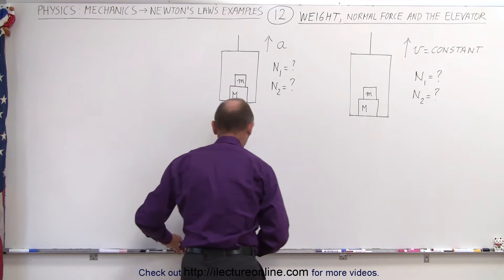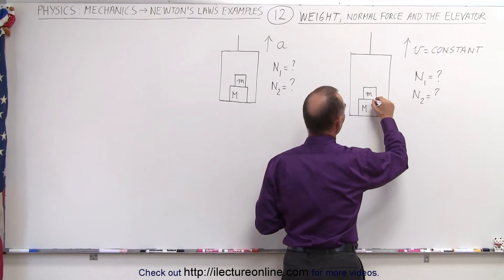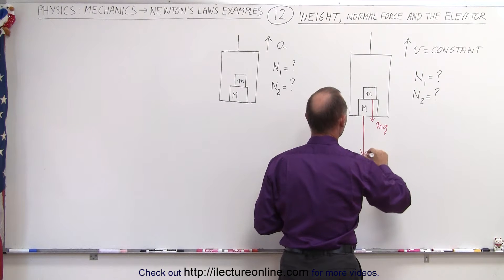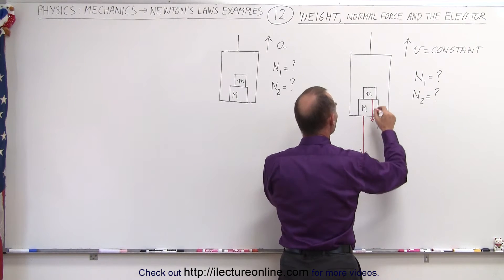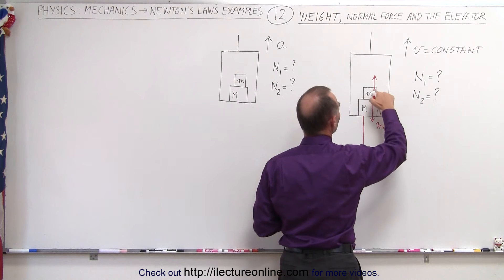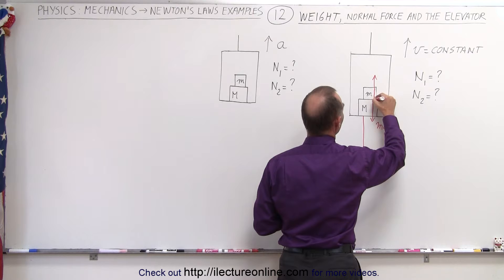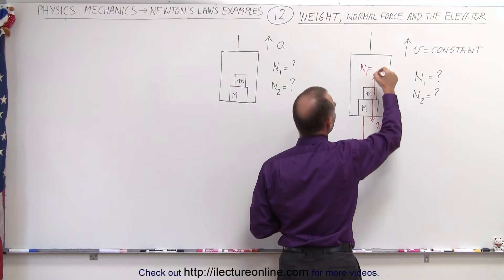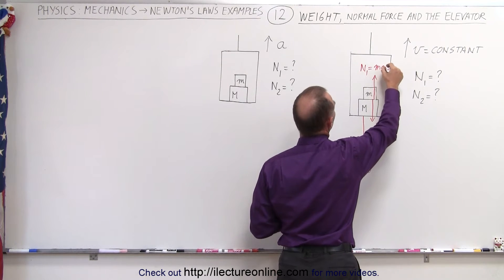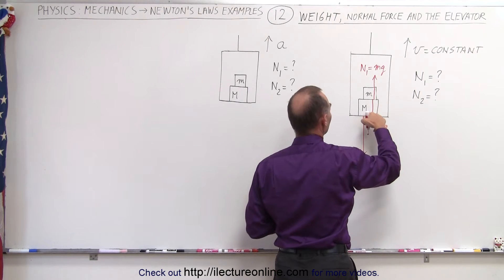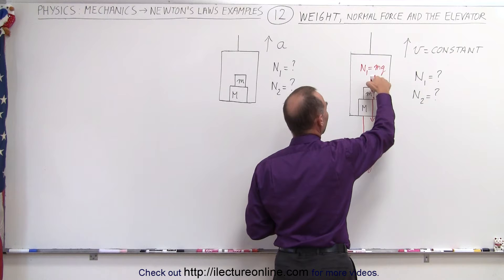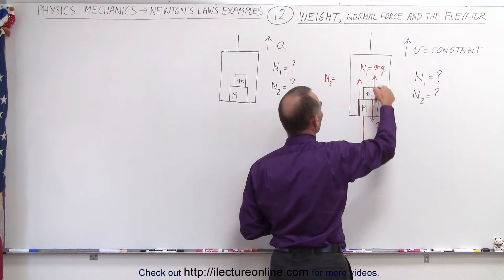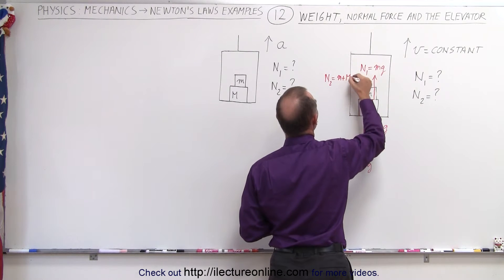First let's draw the forces we are familiar with. We have the small mg pulling downward on the small mass, and the big mg pulling down on the big mass. Then we have a normal force pushing back — the reactionary force of the weight of the small mass pushing on the big mass — so we call this n1, which must equal mg. Over here the big mass pushes down on the floor with the small mass on top, so the normal force n2 would equal the total mass, which is m plus big M, times g.